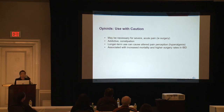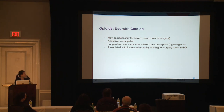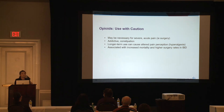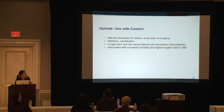Regarding opioids, a word of caution: obviously in the current environment of the opioid epidemic, we have heightened awareness of the potential dangers of these medications. They are necessary for acute severe pain, particularly when patients need surgery. But longer-term use of opioids can be associated with hyperalgesia — over time, nerves can be altered so patients actually experience higher degrees of pain, creating a cycle where pain escalates and opioid levels need to be increased. Opioids have also been associated with an increased risk of mortality and higher surgery rates in IBD.